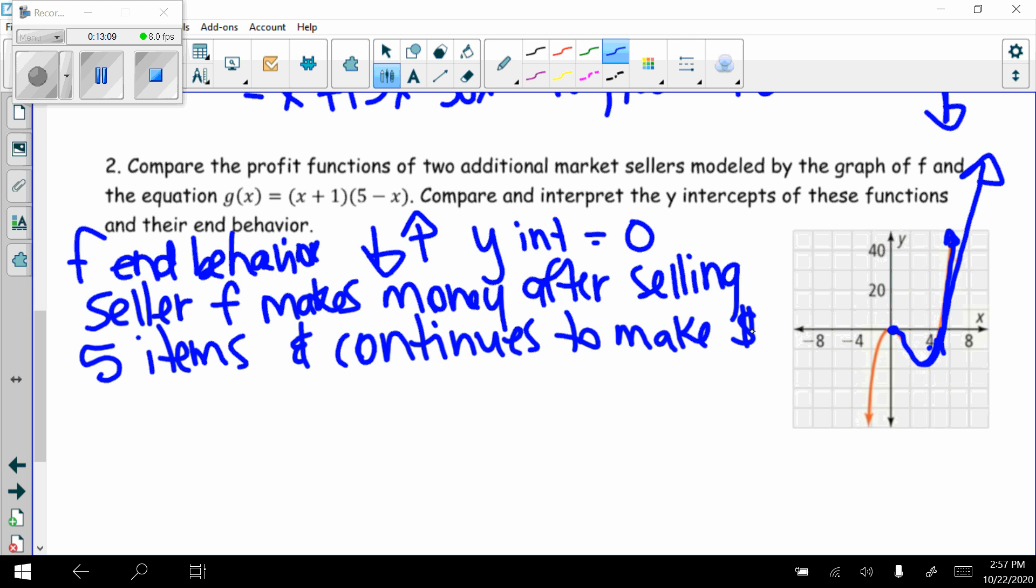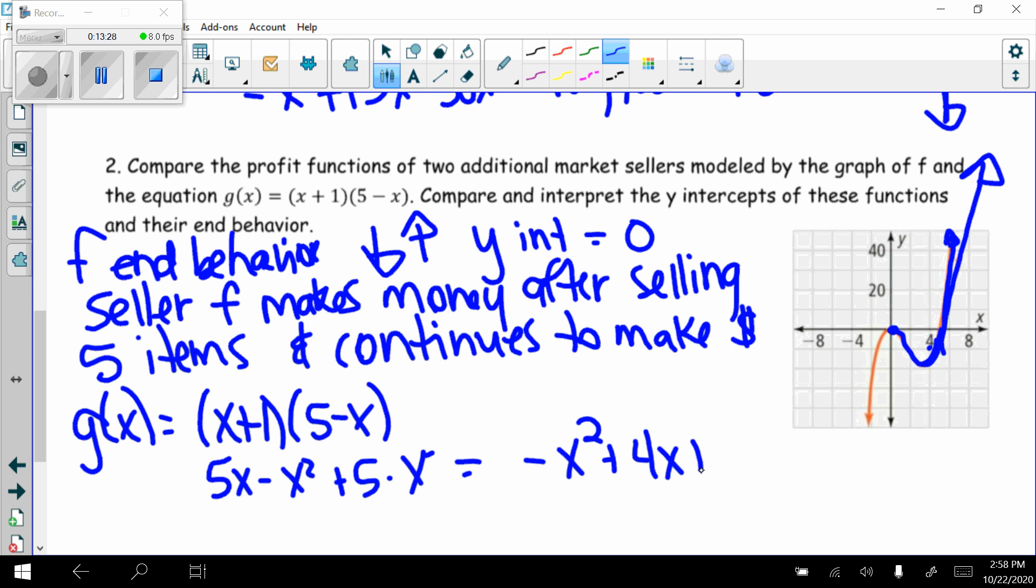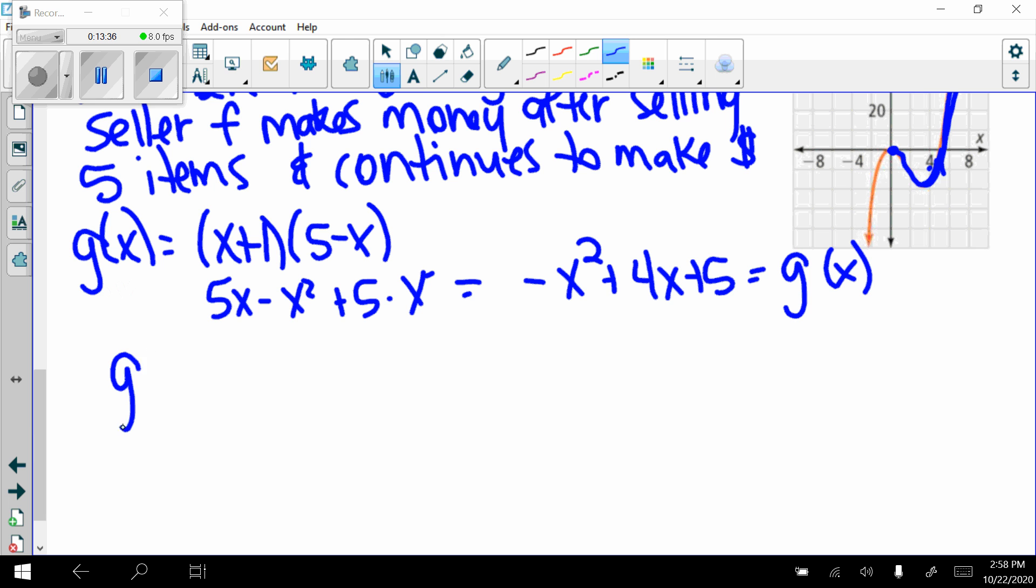So now let's look at g. g(x), I don't have a graph, but I have (x + 1)(5 - x). I'm going to multiply those out. I get 5x - x² + 5 - x. Put in standard form, I get negative x² + 4x + 5. This is g(x). I want to find my y-intercept. My y-intercept is 5. My end behavior, I see I have negative and even. So my end behavior is down and down.